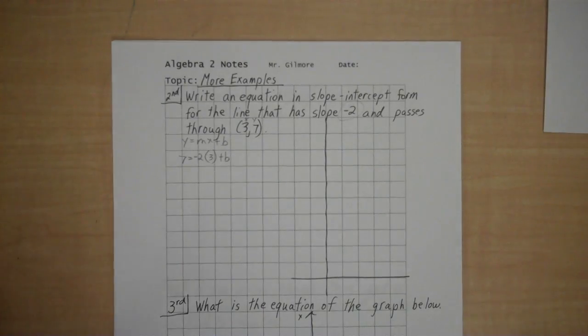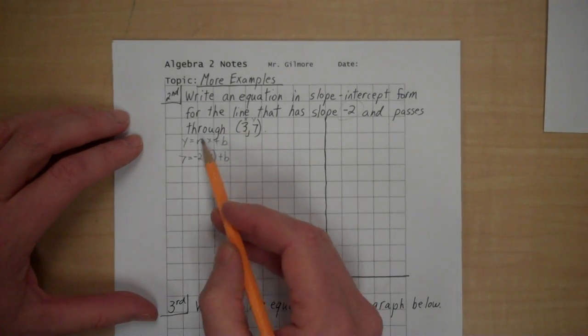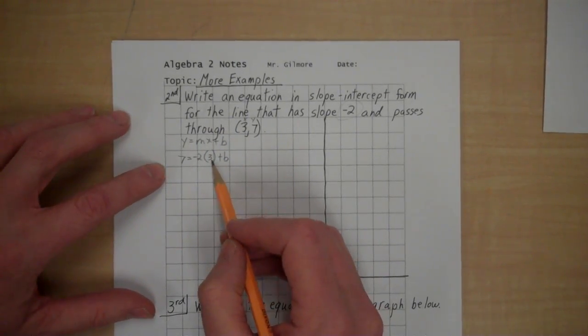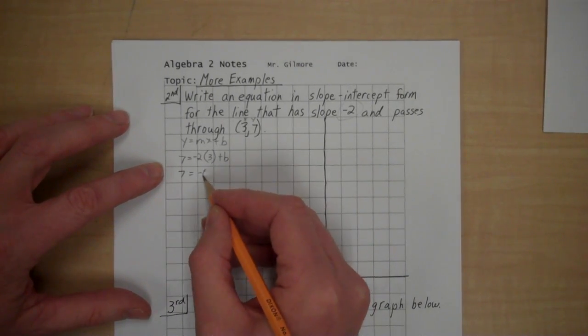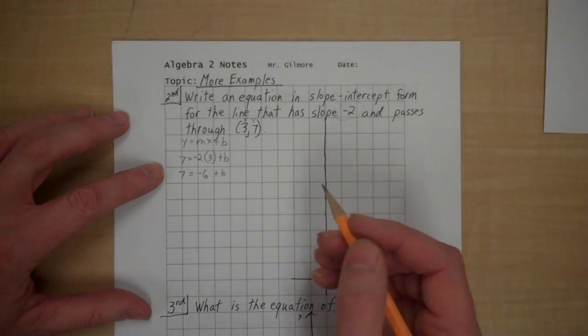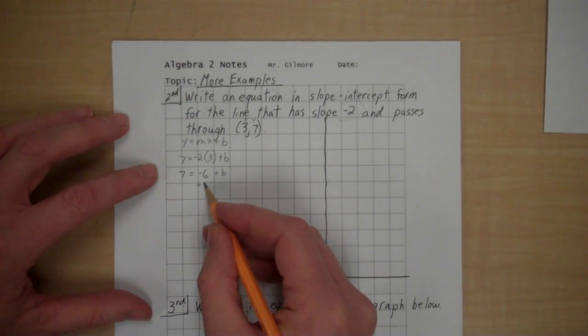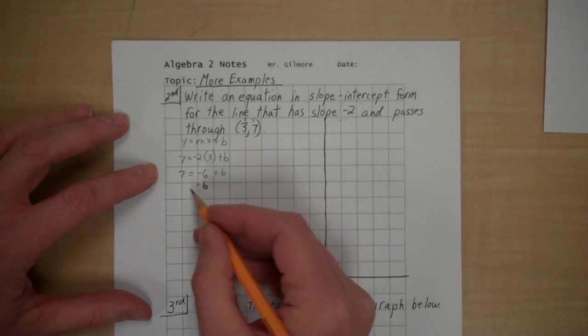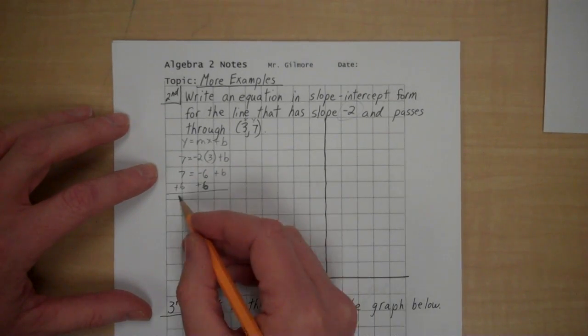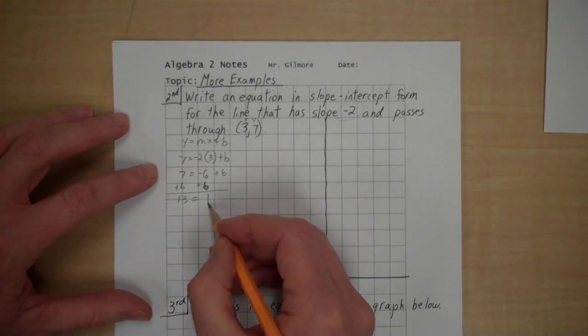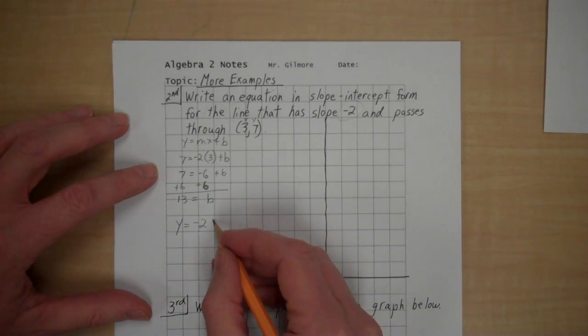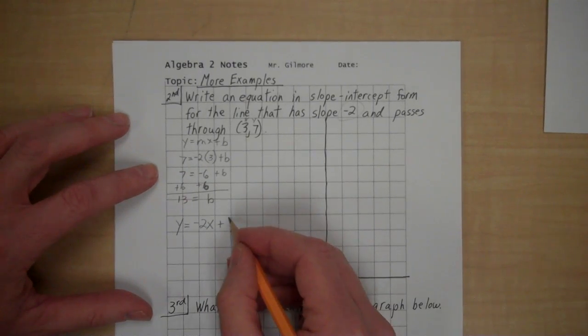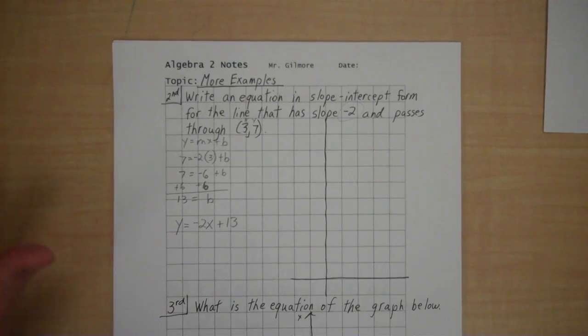So we have everything. We had a y, we had an x. There's many y's and x's that work together, but these are two specific ones that work together. And we're going to solve for b by adding 6 to both sides. And 13 is equal to b. So my equation is y equals m, which is negative 2, x plus b, which we just solved for to be 13.